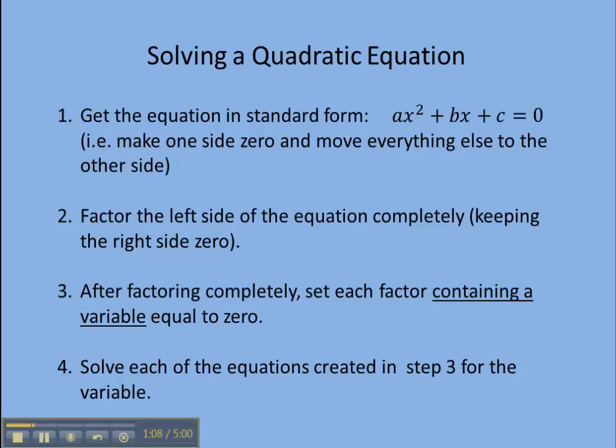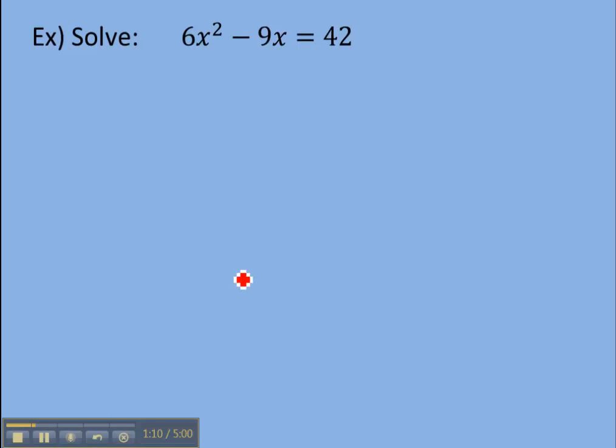Now let's take a look at an example. So we'll solve 6x squared minus 9x equals 42. Now the first thing you should notice is that this is a quadratic equation because the highest power of x we have is x squared. And the next thing you should look at is, am I in standard form? And currently we aren't, right, because we have a 42 on the right side of the equation here, everything else on the left side.